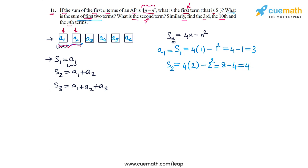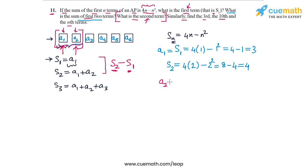Next, the question asks for the second term. Here is the key idea: we found the sum of the first two terms equals 4, and we found the first term equals 3, which immediately tells us that the second term is 4 minus 3, or 1. To find the second term, you subtract S1 from S2. Algebraically, A2 equals S2 minus S1, which is 4 minus 3, equal to 1. So the second term is 1.